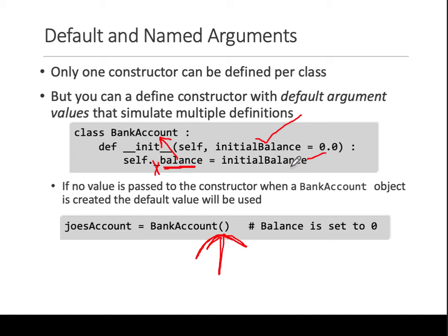When you create a constructor with no default value — if that equals-zero was not present and you call it without providing a value — the compiler will give you an error saying it needs a value for initial_balance.